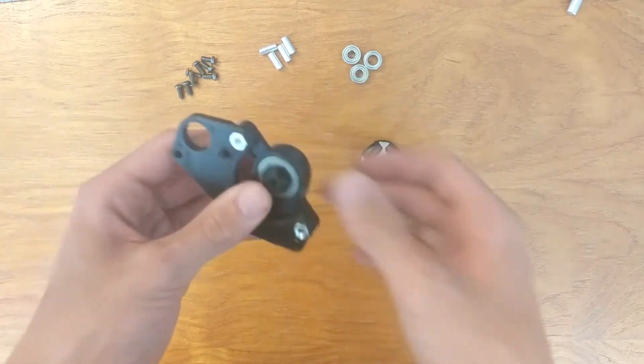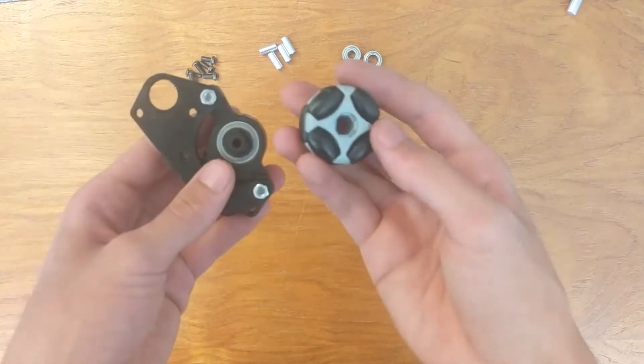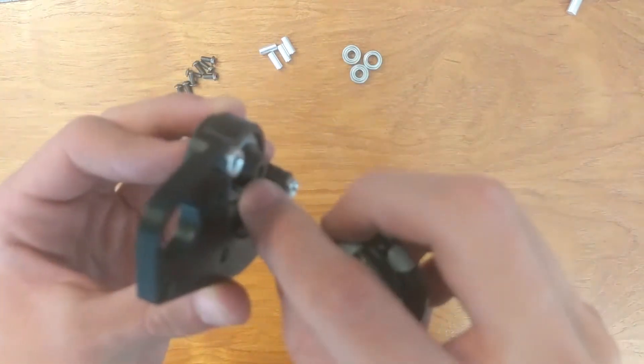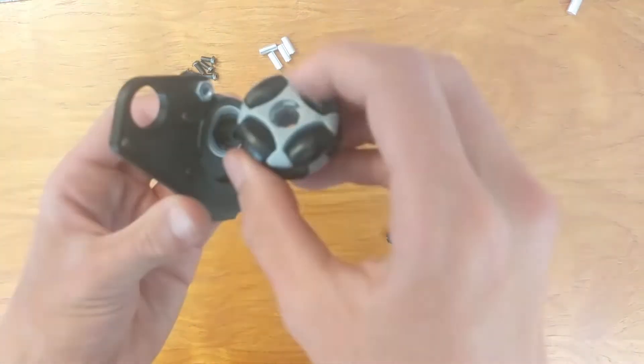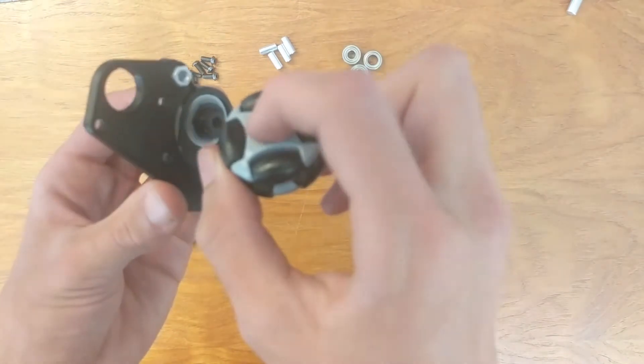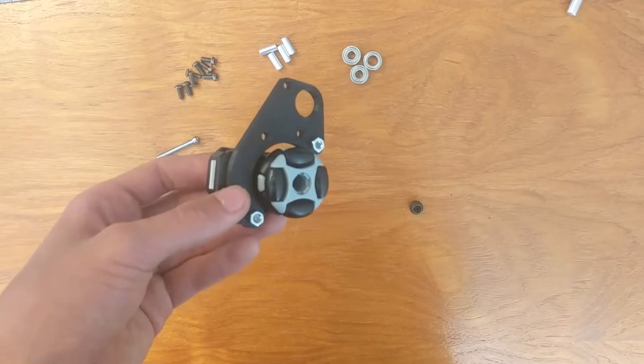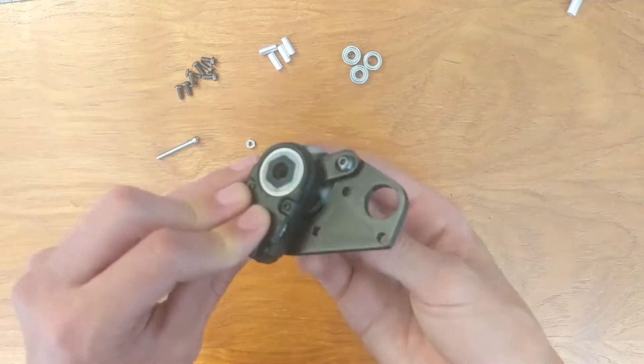Next, take your 35 millimeter Rotacaster omni wheel. You can see there's little grooves on the insert and there's also little grooves in the inside of the wheel, so you need to line these up and press the wheel onto the insert.